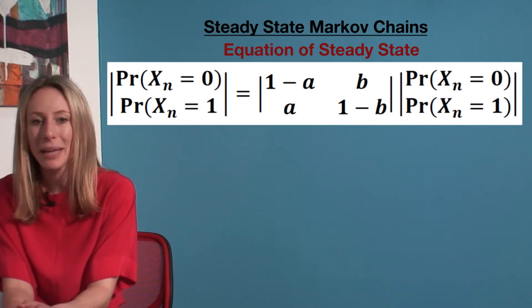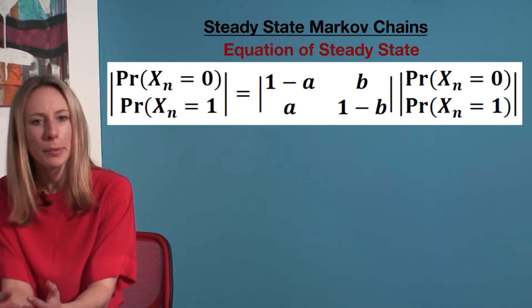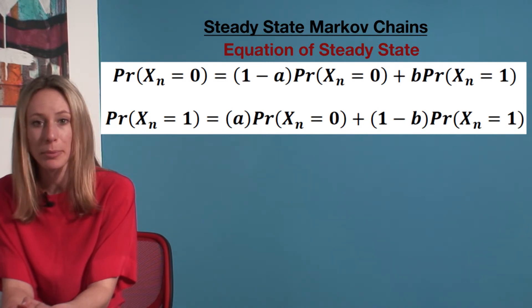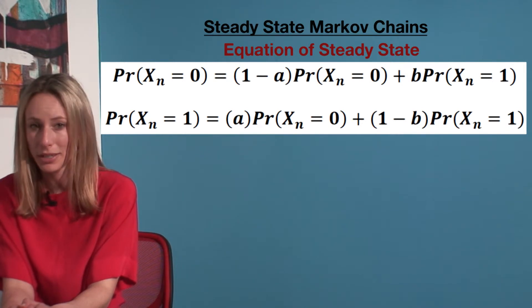We can expand the matrix and solve for the steady state probabilities. Probability of state zero equals (1-a) times probability of state zero plus b times state one. Probability of state one equals a times probability of state zero plus (1-b) times probability of state one.